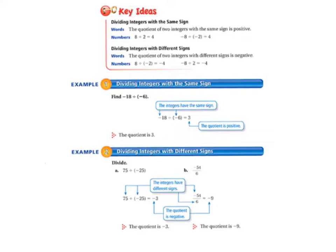And you need to start by copying these key ideas at the top of your page into your math notebook. It says, Dividing Integers with the Same Sign, the quotient of two integers with the same sign is positive. And it gives you some examples there.